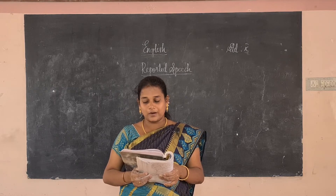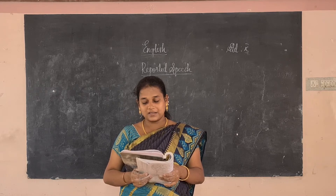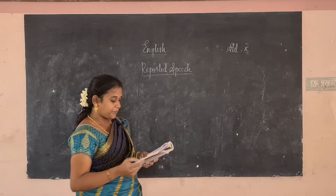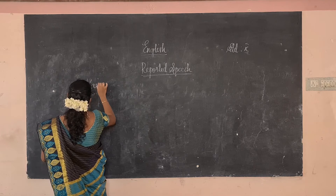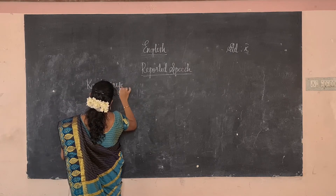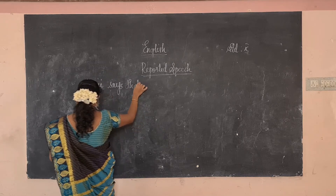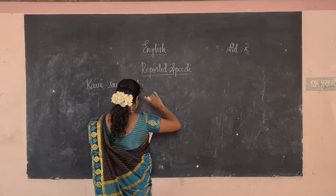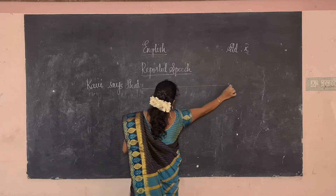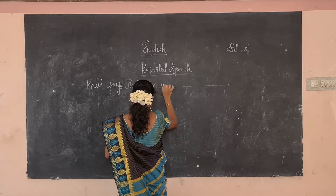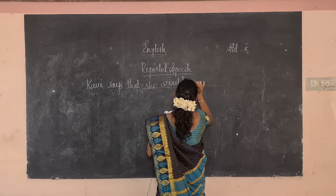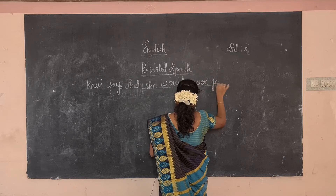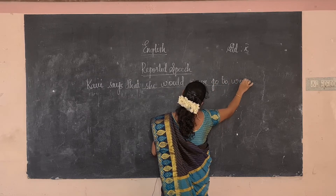'I will never go to work.' Kavi says that — here we have to fill in — she will never go to work. We change 'will' into 'would': she would never go to work.